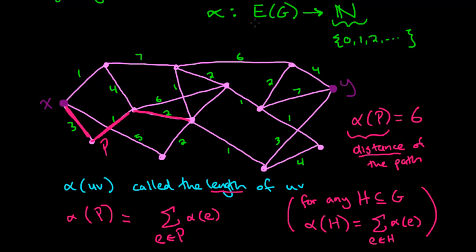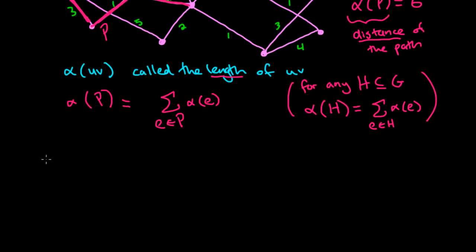So this actual function here that maps our edges to the numbers, the natural numbers, is actually called something special. It is called a weight function, weight function. So that's what we're going to call alpha.